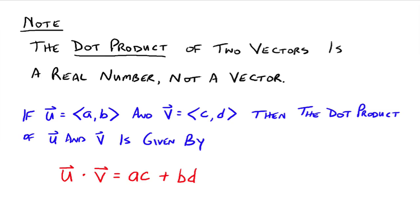The dot product of two vectors is a real number. It's not going to give you another vector back, it's just going to give you a real number. So if you take vector u, which is (a, b), and vector v, which is (c, d), then the dot product u dot v is defined as a times c plus b times d. You take the two horizontal components, multiply them together, the two vertical components, multiply those together, and add them up. And that's the dot product.